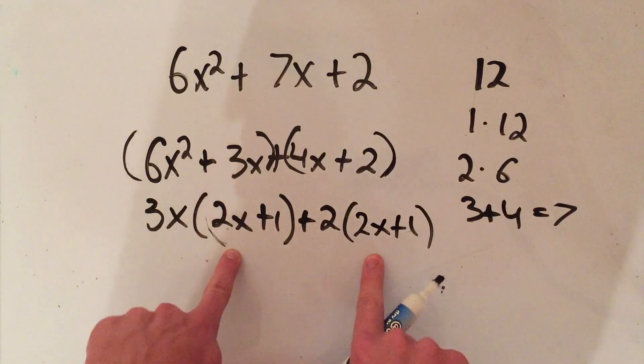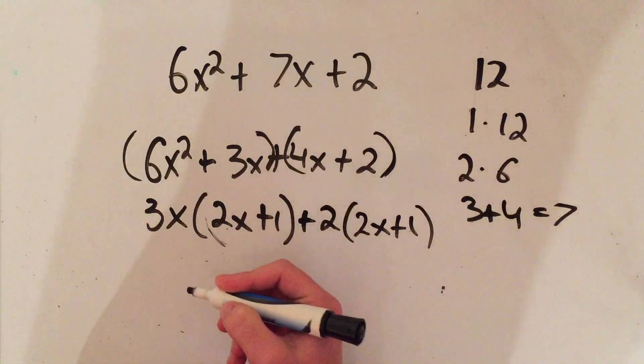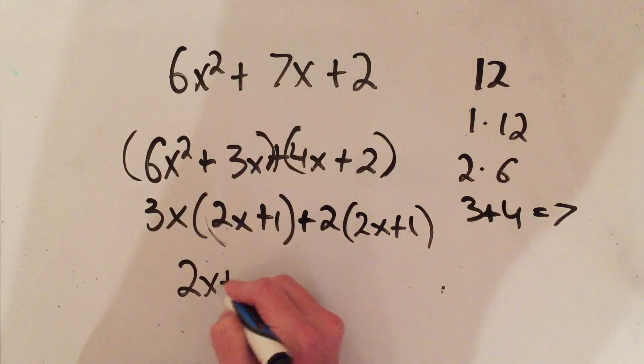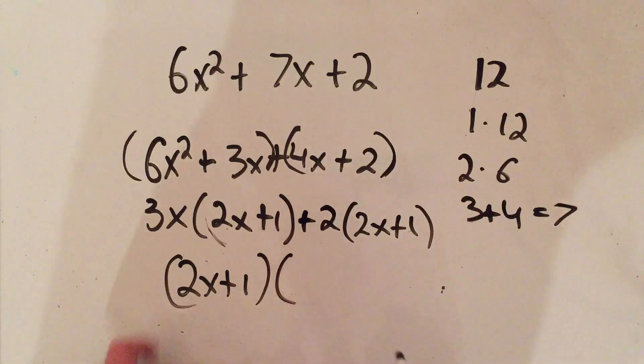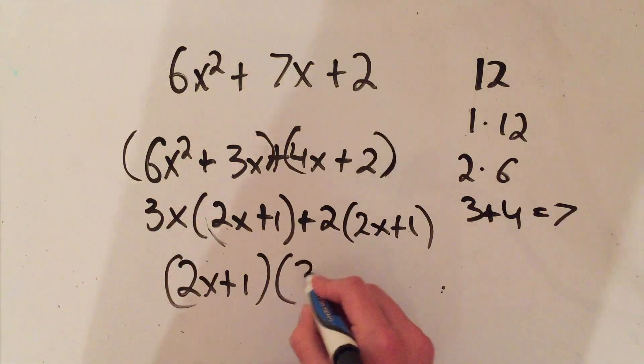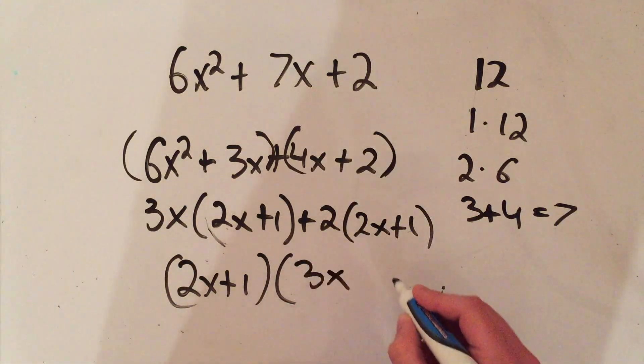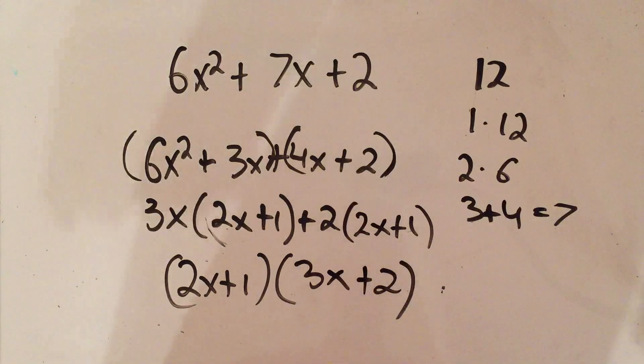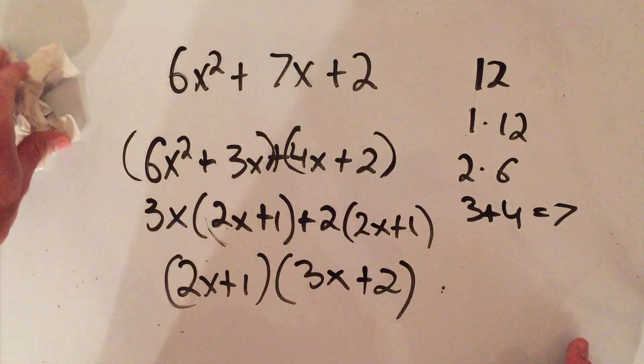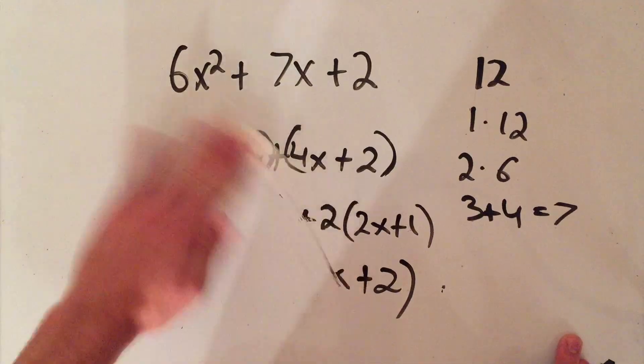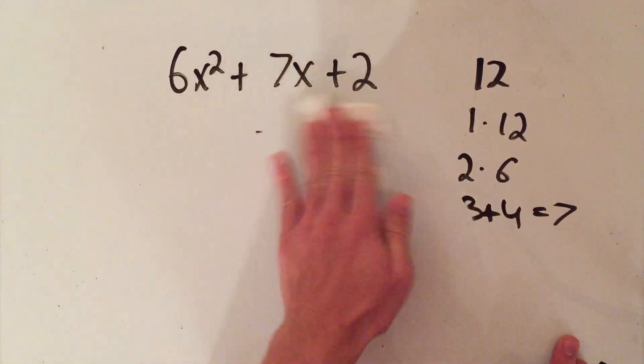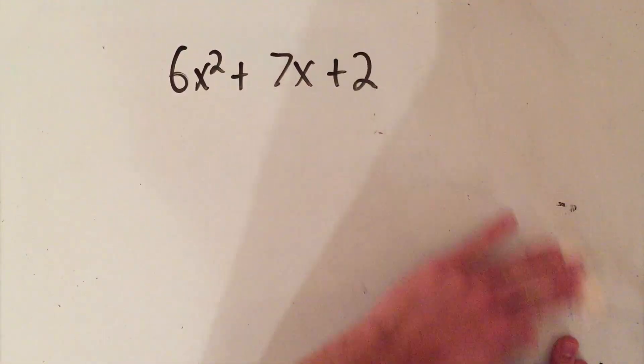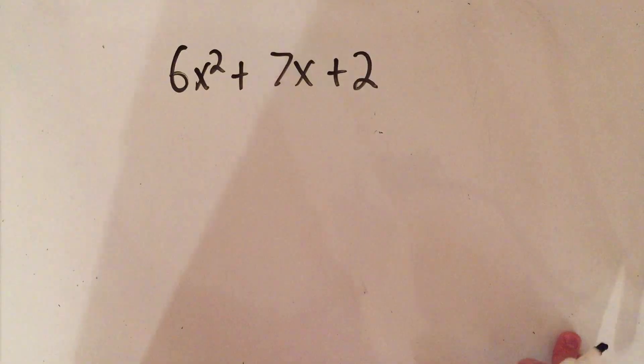And now you notice that 2x plus 1 and 2x plus 1 are the same, so I can factor that out front and multiply by whatever's left - in this case, 3x plus 2. Okay, that is the old way of factoring by grouping, and there's nothing wrong with it. It works absolutely.